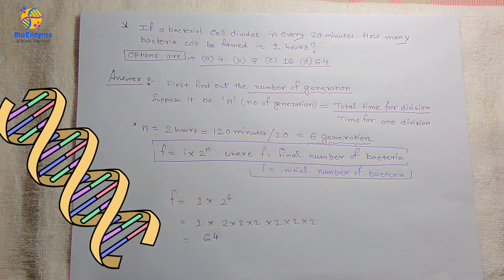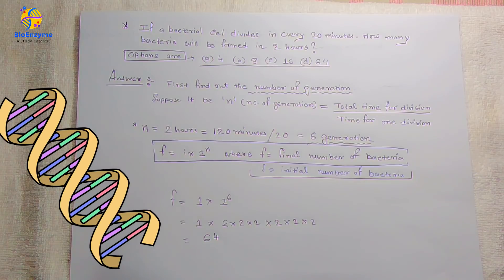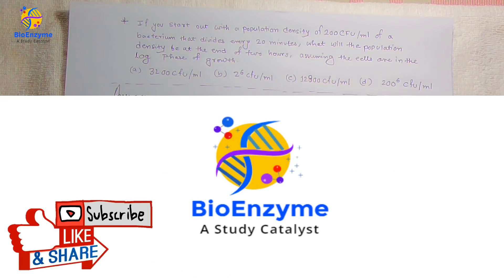Now there is another formula for this type of question: f equals i multiplied by 2 to the power n. Here, f is the final number of bacteria (unknown), and i is the initial number of bacteria. Since no initial value is given, we take i as 1. So the answer is 1 × 2^6 = 64.